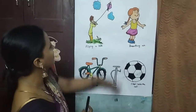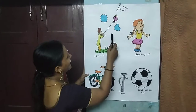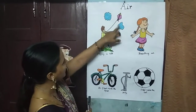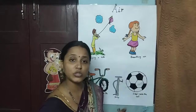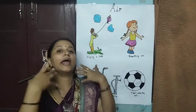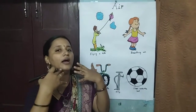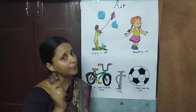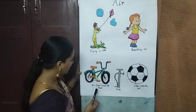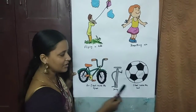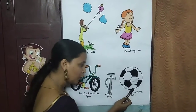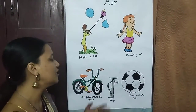We will just quickly recap once again. Air moves the kite, so the boy is flying a kite. We breathe air — we take it inside, breathe in and then breathe out, which is very important for us to live. Air is filled in tires using a pump. Air is filled in football and all balls using the pump.